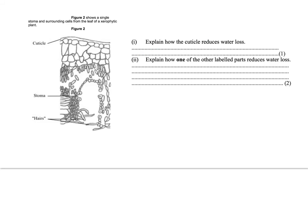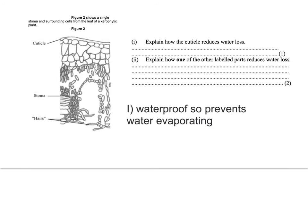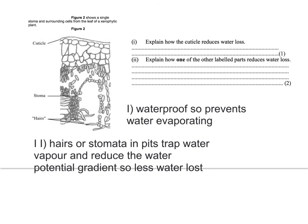Let's look at some exam questions. A section through a leaf is shown with a thick, waxy cuticle. The first question asks how the cuticle reduces water loss — the answer is that the cuticle is waterproof or impermeable to water. The second part asks how one other labelled part reduces water loss. You could discuss the hairs around the stomata or the stoma sunken into a pit or groove. Whichever feature you choose, the reason is the same: they trap water vapour and reduce the water potential gradient, so less water is lost by evaporation. You could also mention that stomata can close, reducing water loss as less water can diffuse out.